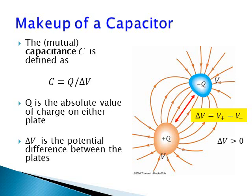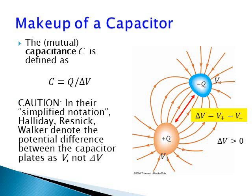The capacitance of such capacitor is then defined as the ratio of Q divided by delta V. So, Q here is the absolute value of charge on either plate. Delta V is the potential difference between the plates.